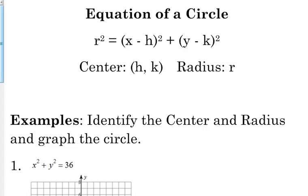H is the number that's paired with the X. H is the number paired with X. K is the number that's going to be paired with the Y. Notice these subtraction signs.